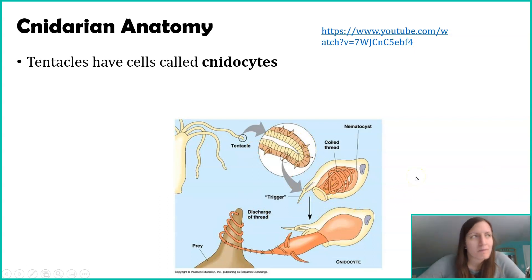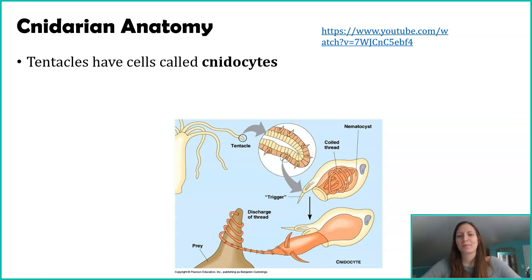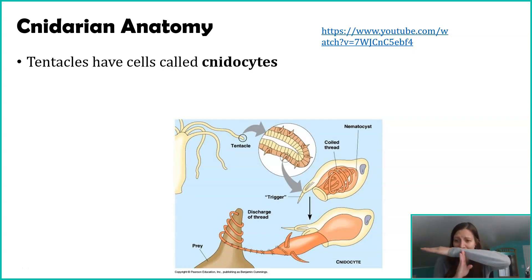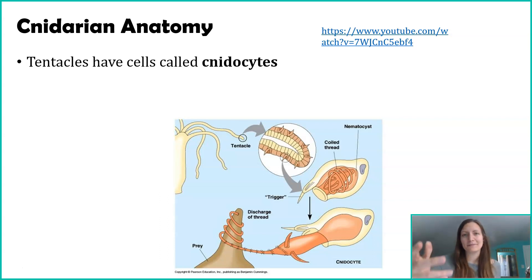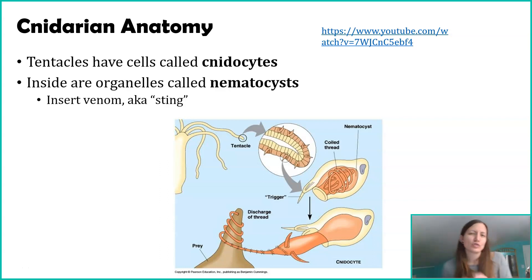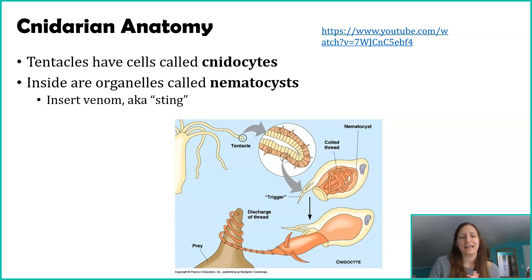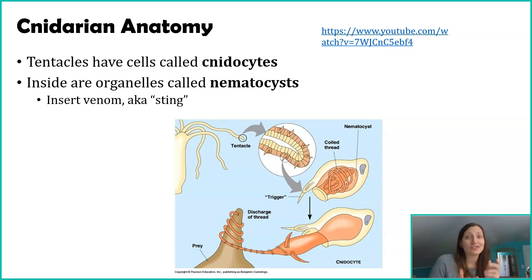The spike you see on the cnidocyte is a trigger hair. The gray area here represents the tentacle itself. That little hair is meant to get triggered — if something comes across and moves it, it stimulates that stinging cell to fire. The cnidocyte is the name of the cell, and when that trigger hair is triggered, what ejects is an organelle found inside the cnidocyte called a nematocyst. The nematocyst is the organelle that actually does the stinging.